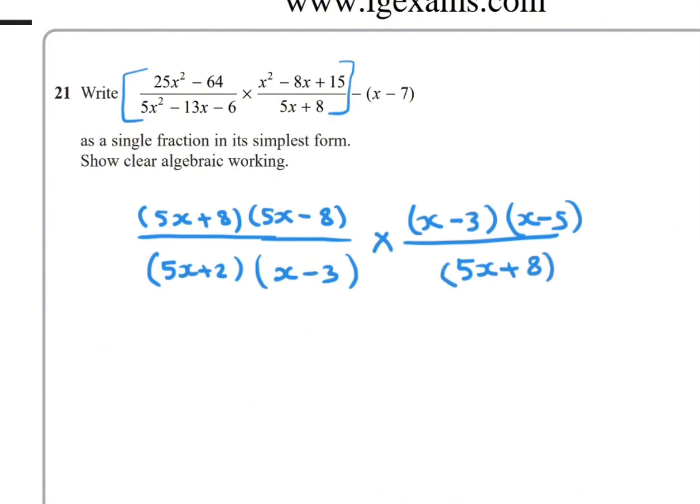Now cancel the common factors. Simplify numerator with numerator. So 5x + 8 cancels with 5x + 8, and x - 3 cancels with x - 3.